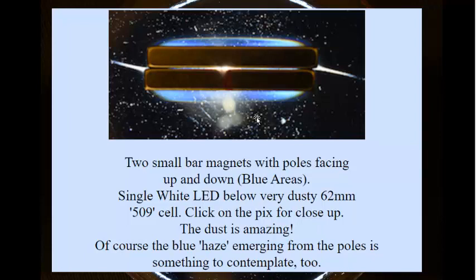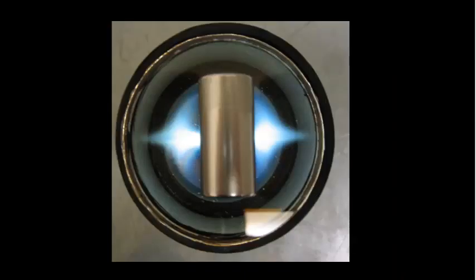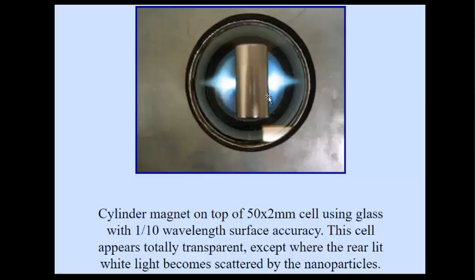I did contemplate this — it's very interesting. This is a white light behind the ferrolens with the magnet on top, and you get this blue haze above and below the poles. Here's another image from their website: a cylinder magnet on top of a ferrolens with rear-lit white lights being scattered by the nanoparticles, and you have this blue haze again — this blue tinge. The light is behind; it's a white LED, but you still get this blue tinge.